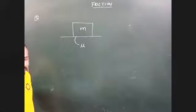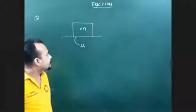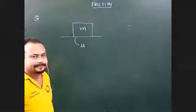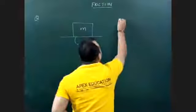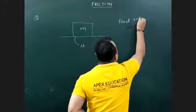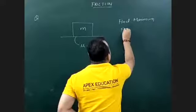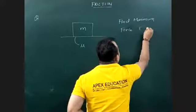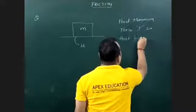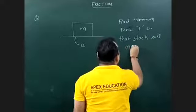Mu is the coefficient of static friction. We need to find the minimum force F required so that the block will move. How much minimum force will cause the block to move?